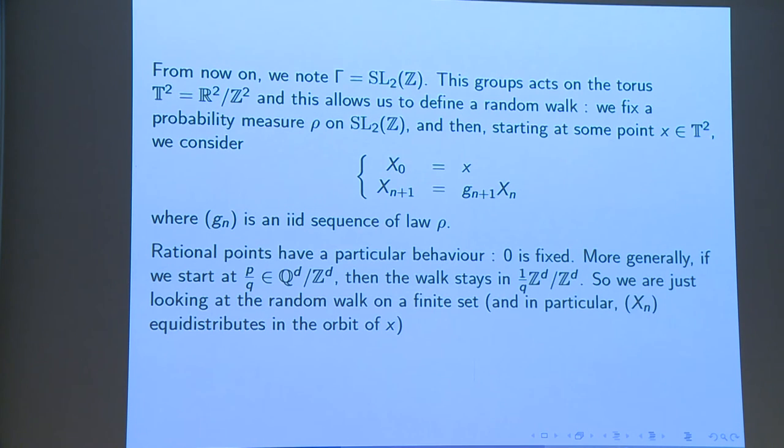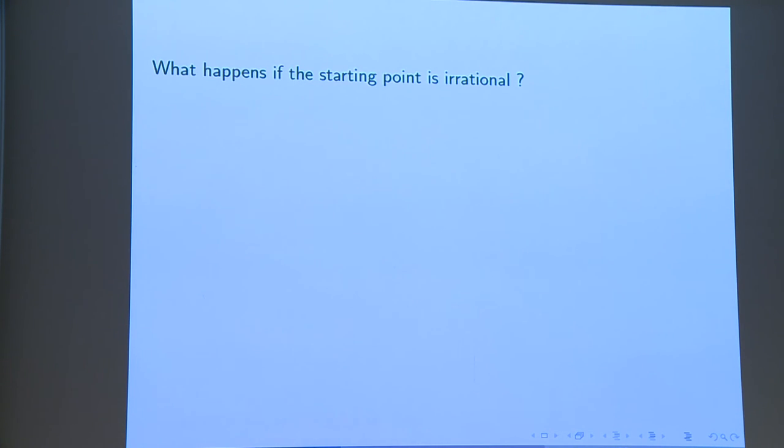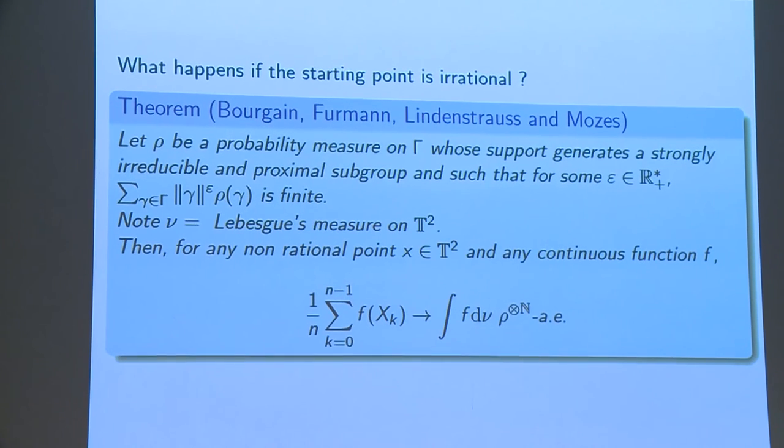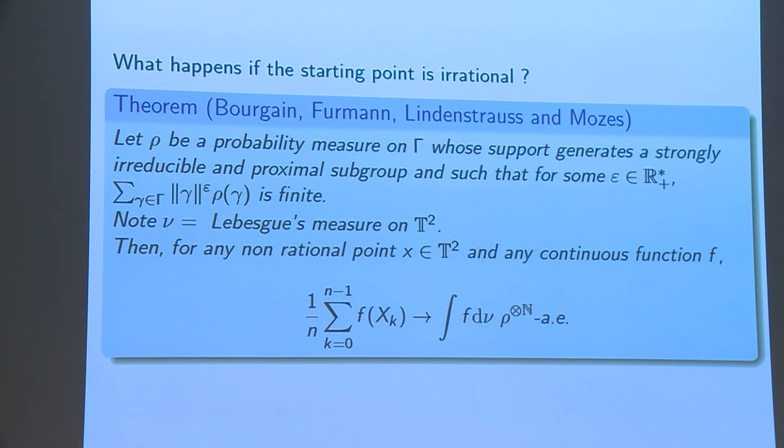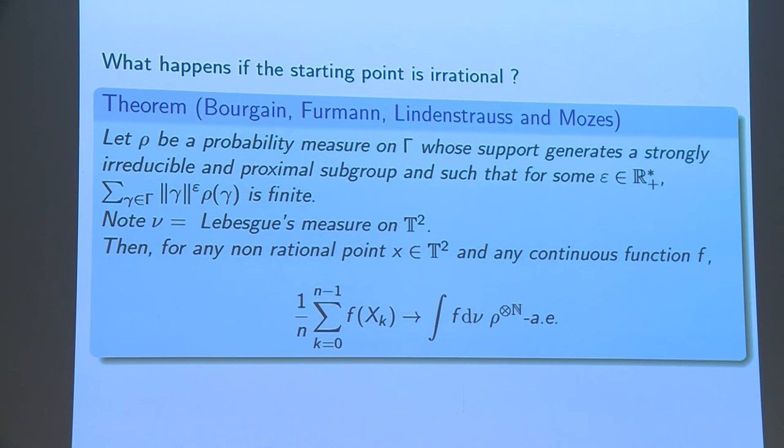So the question is, what happens if the starting point is non-rational? And this is a theorem by Bouguin, Fuhrmann, Liedenschutz and Moses, who says that always with my two strongly irreducible and proximal assumptions, if I ask an exponential moment, then for any non-rational point x, the walk equidistributes in the torus.